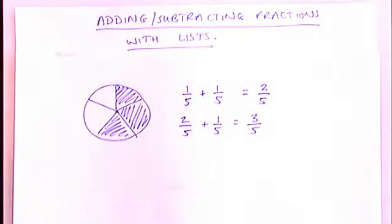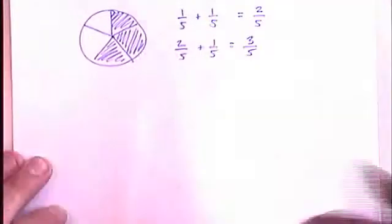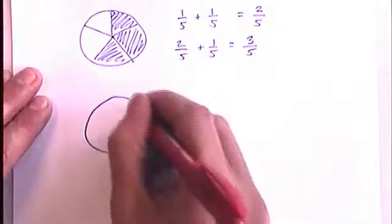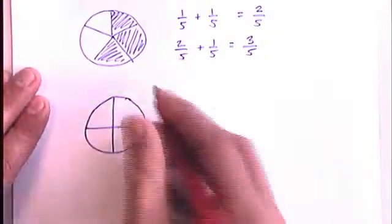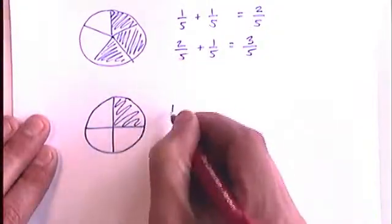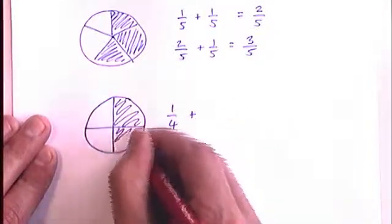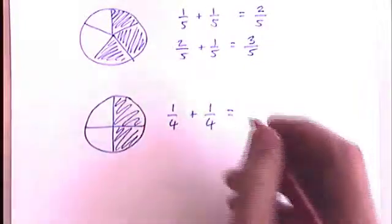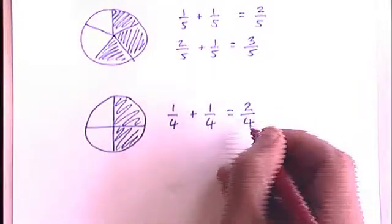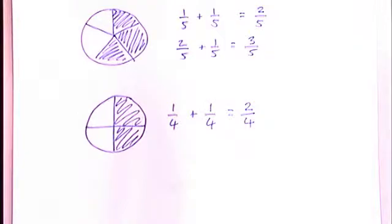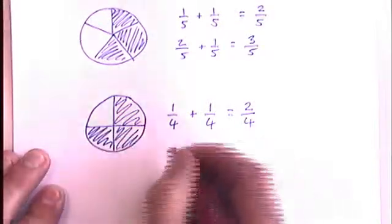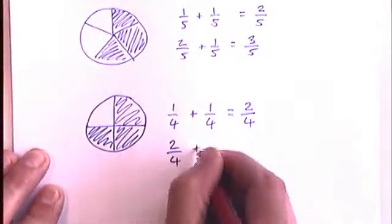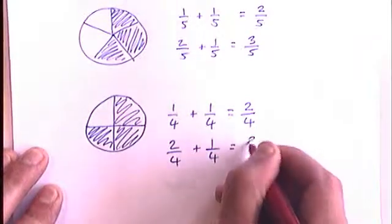So that sort of adding of fractions is really straightforward and we can do the same thing with quarters. One quarter plus another quarter makes two quarters. Sometimes you simplify that to make a half, but let's just stick with two quarters for the moment. And then add another quarter is three quarters.